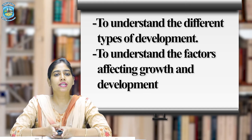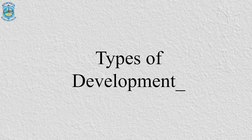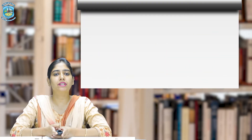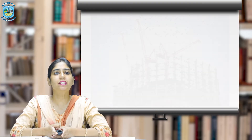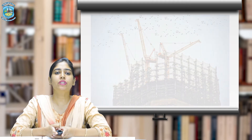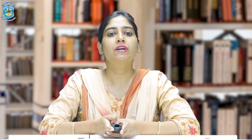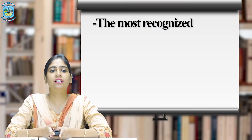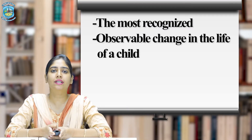Let us first see types of development. We have been talking about development since the beginning of this chapter. All the examples cited above mention some or the other aspects of development. Now let us see the different types of development. Physical development is the most recognized and observable change in the life of a child.